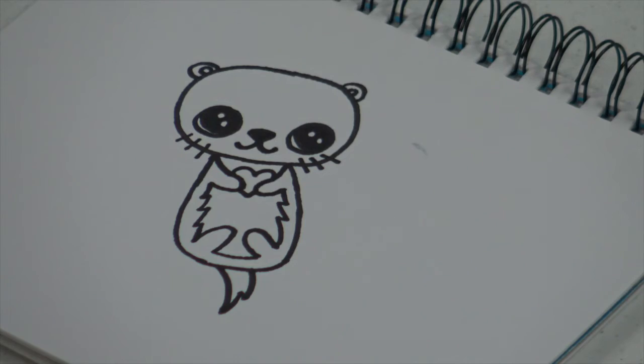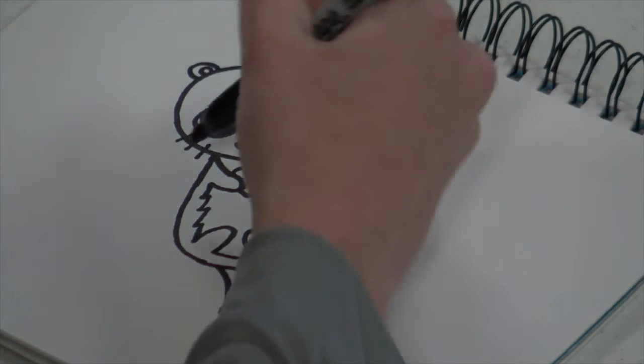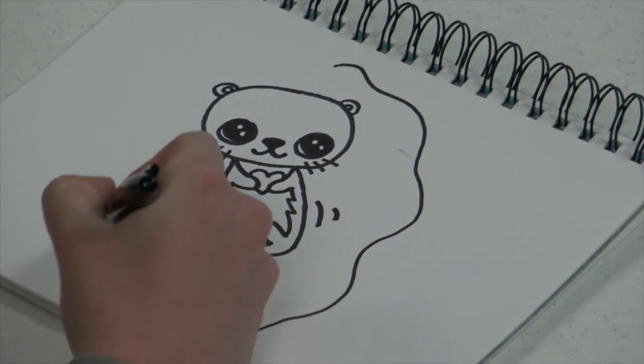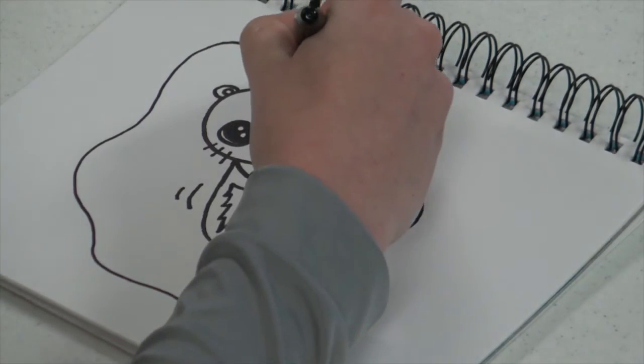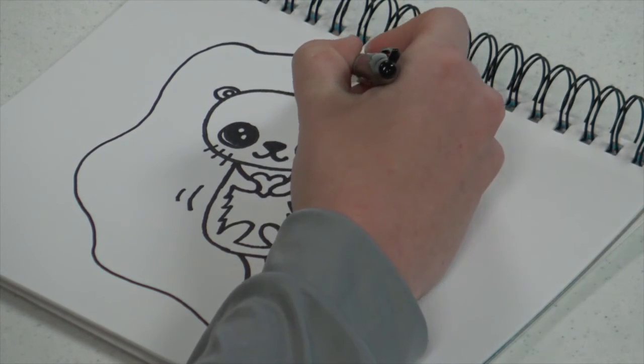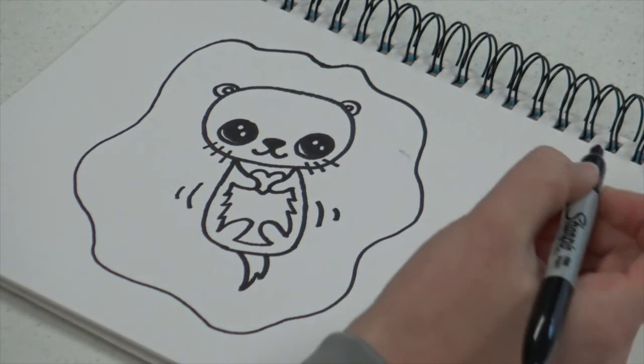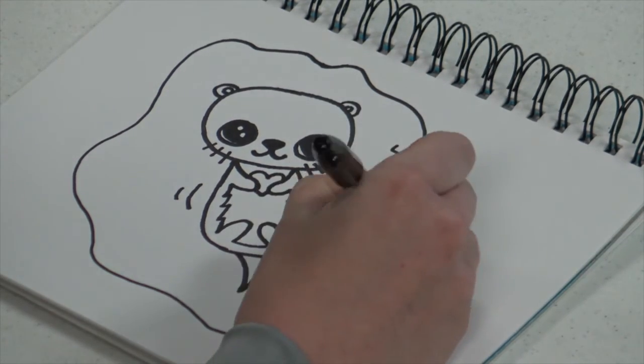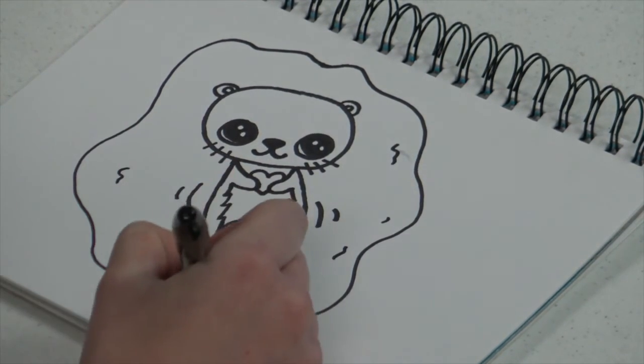Then to make the otter look like it's swimming in water you can add two lines on each side. And then a big squiggly line that looks like a puddle around the entire otter. Then the last step is just add little squiggles in the water around the otter to make it look like it's moving.